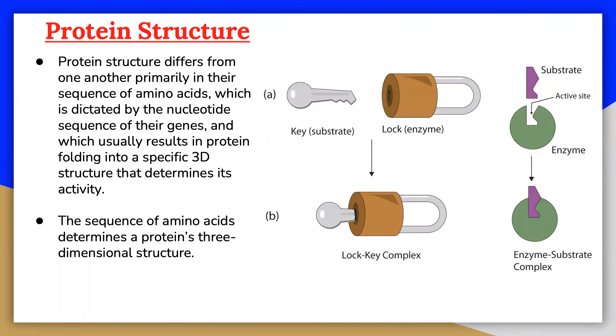When we use the term polypeptide to refer to a single polymer of amino acids, it may or may not have folded into its final functional form. The term protein is sometimes used interchangeably with polypeptide.